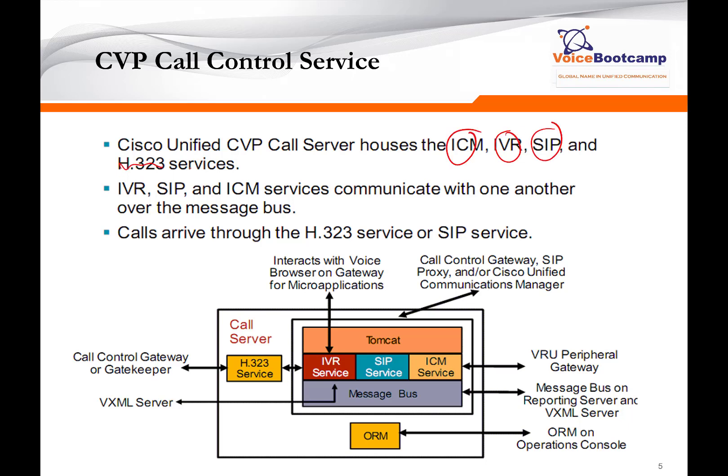H.323 is no longer supported, or is only there for backward compatibility. IVR, SIP, and ICM services will communicate with one another over a message bus. As calls arrive to the call server via the SIP service, based on whether it is an existing call or a new call, a different action will take place.